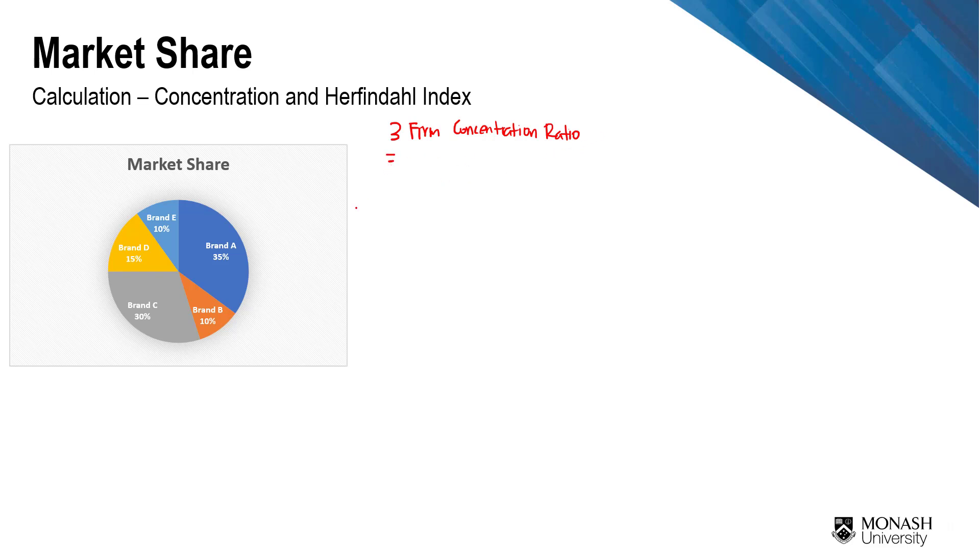So that will be equivalent to the highest 3 market shares in your market. In this case, the highest 3 will be brand A, plus brand C, and brand D. So my 3 firm concentration ratio will be 35% plus 30% plus 15%.